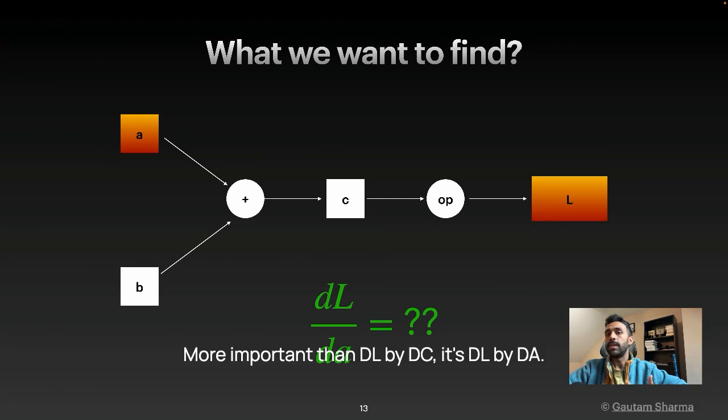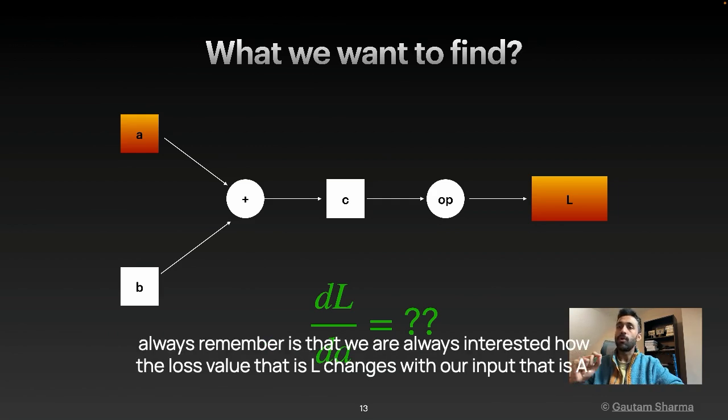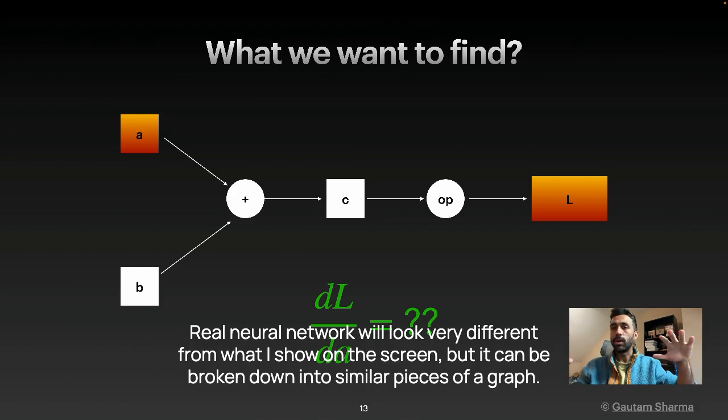More important than DL by DC is DL by DA. In neural networks, the most important thing that you should always remember is that we are always interested in how the loss value L changes with our input that is A. A real neural network will look very different from what I show on the screen, but it can be broken down into similar pieces of a graph.